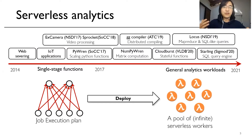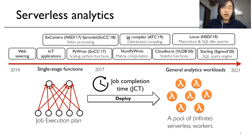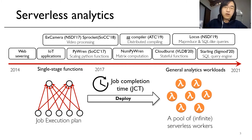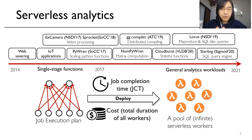People deploy these applications on top of serverless with two major performance goals. First, we want the job to finish as fast as possible — this corresponds to job completion time, or JCT for short. Second, we also want the job to cost as little as possible. In many cases, the total cost is dominated by the total duration of all the serverless workers.